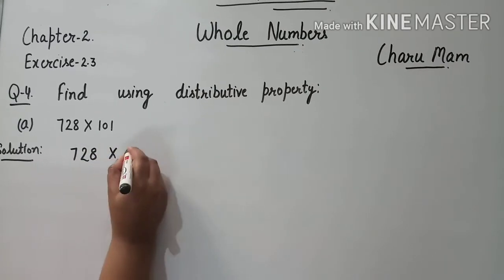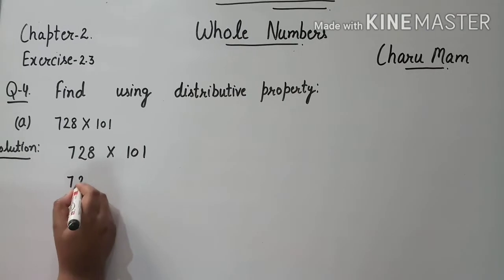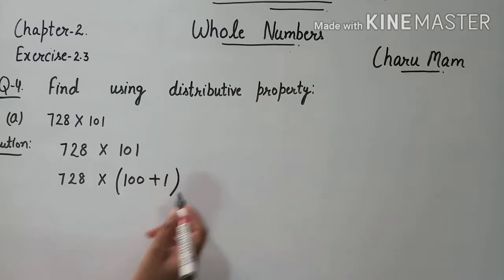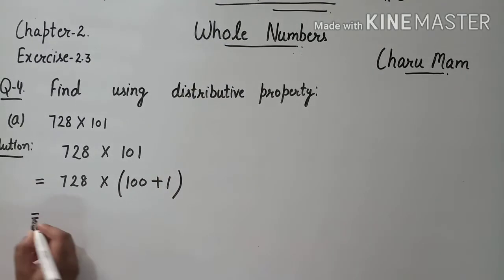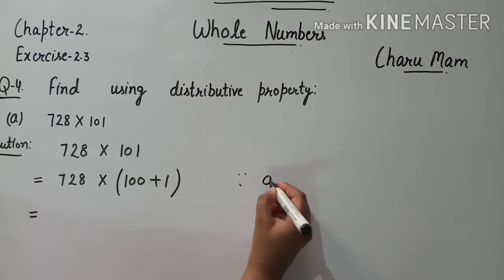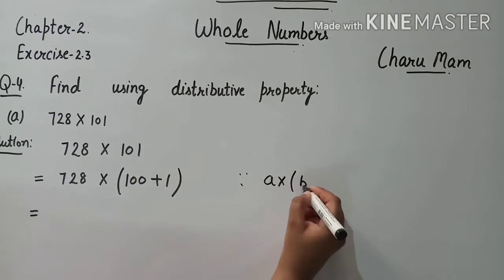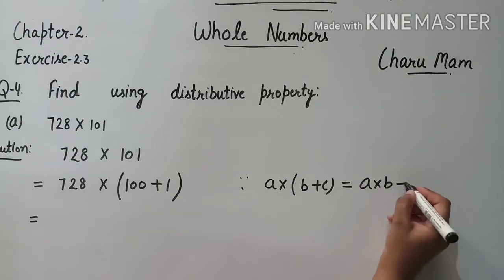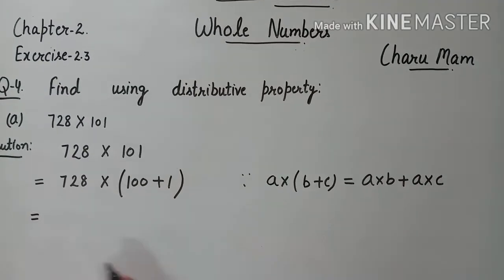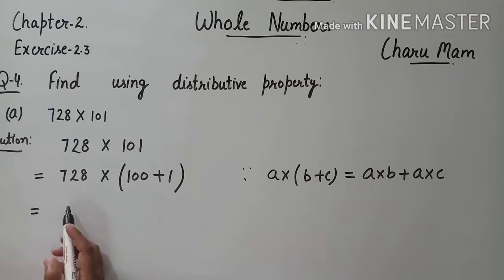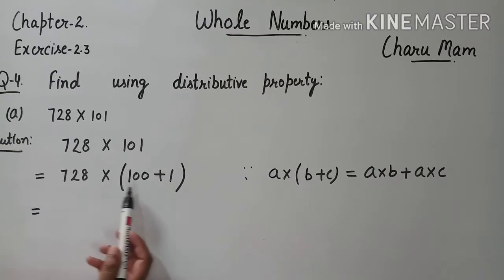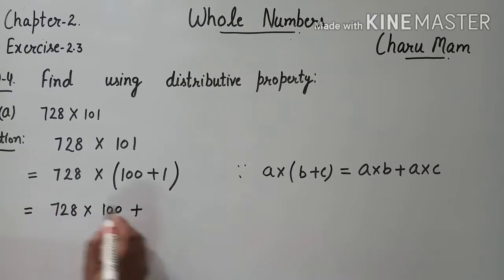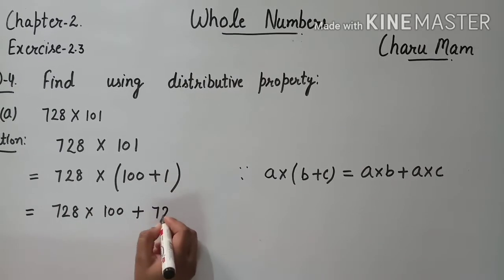728 multiply 101 — सबसे पहले हम 101 को 100 plus 1 की form में लिखेंगे, और हम distributive property apply करेंगे. Distributive property क्या थी? A multiply (B plus C) — A को हम B से multiply करेंगे, then plus, फिर A को C से multiply करेंगे. Similar हम यहाँ पर distributive property apply करेंगे: 728 को 100 से multiply करेंगे, then plus, फिर 728 को 1 से multiply करेंगे.